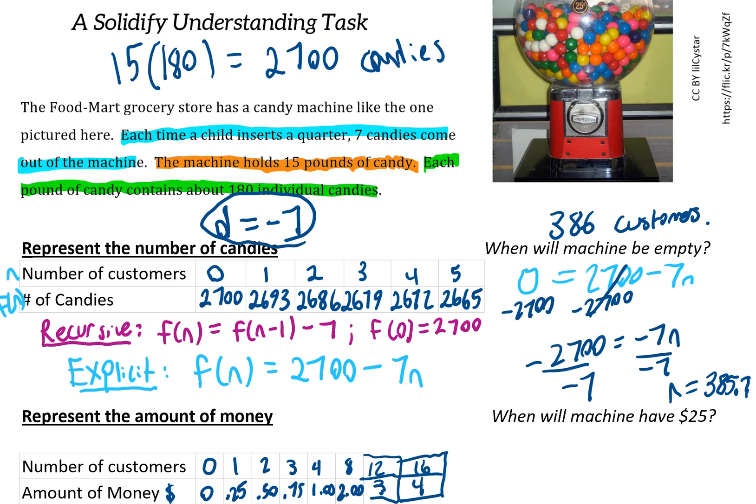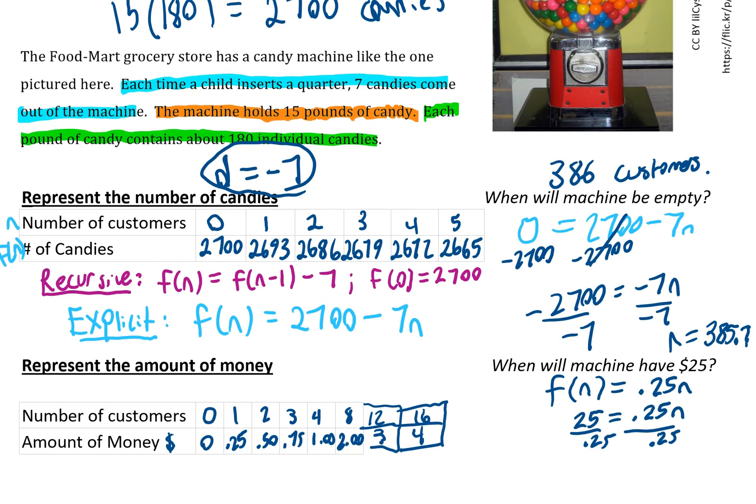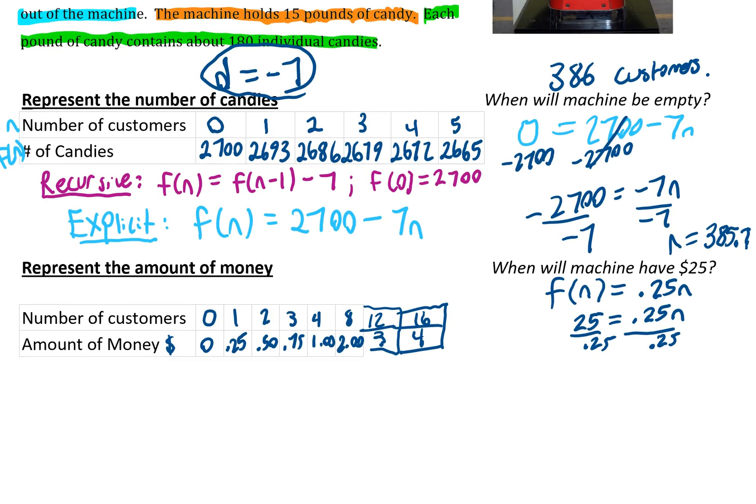When will the machine have $25? We can use the rule f(n) = 0.25n. So 25 = 0.25n. This is a one-step equation. Dividing both sides by 0.25, we get n = 100 customers. The machine will have $25 after 100 customers.